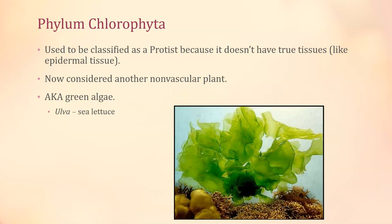Chlorophyta is fully aquatic — it can only live in water, and most of the time in saltwater marine environments. It still has no vascular tissue because it doesn't have tissues at all. A lot of people call this green lettuce, but its genus name is Ulva — this is what Ulva looks like alive. So: green algae essentially.